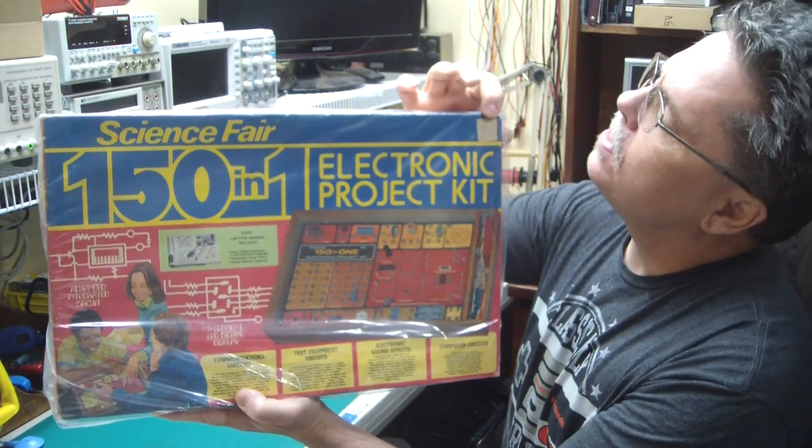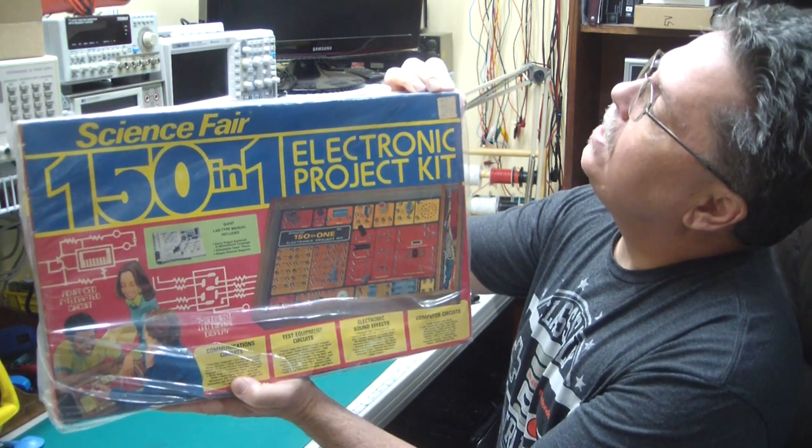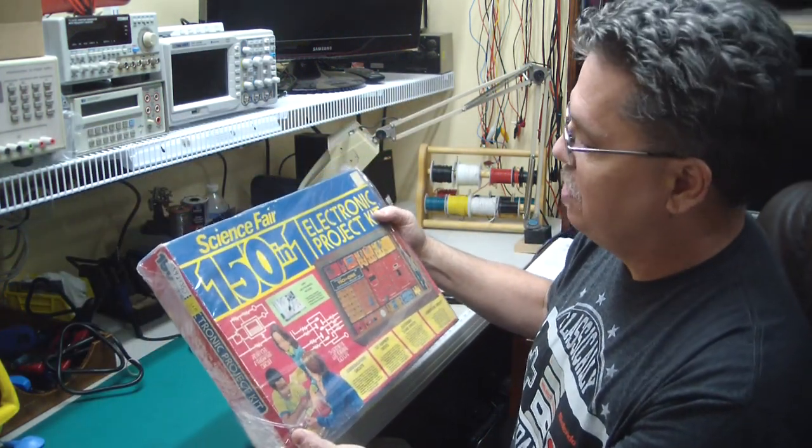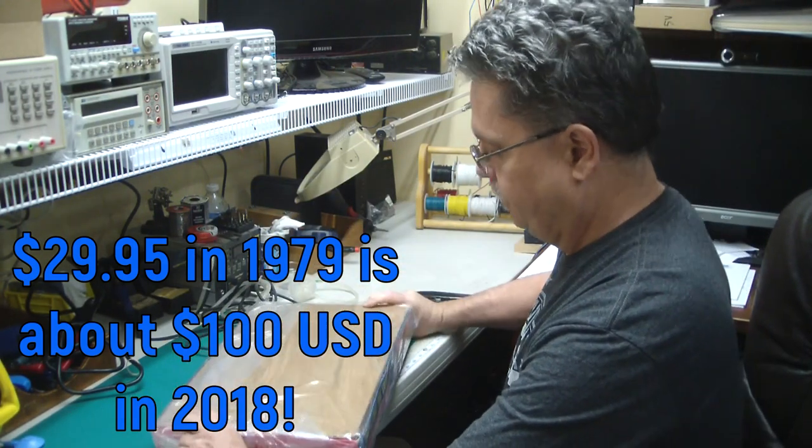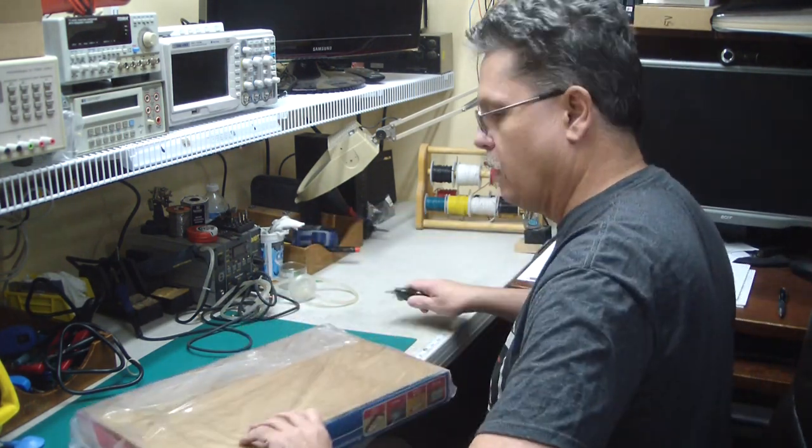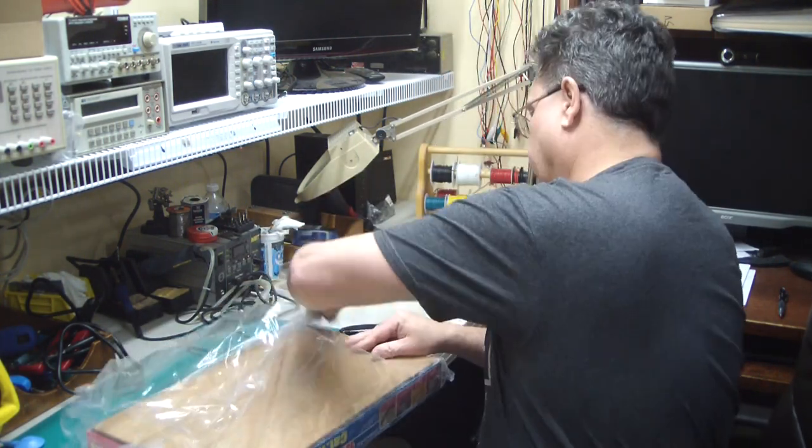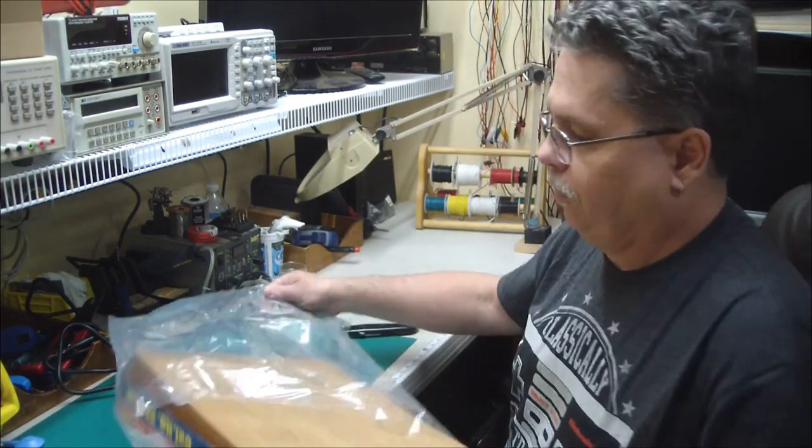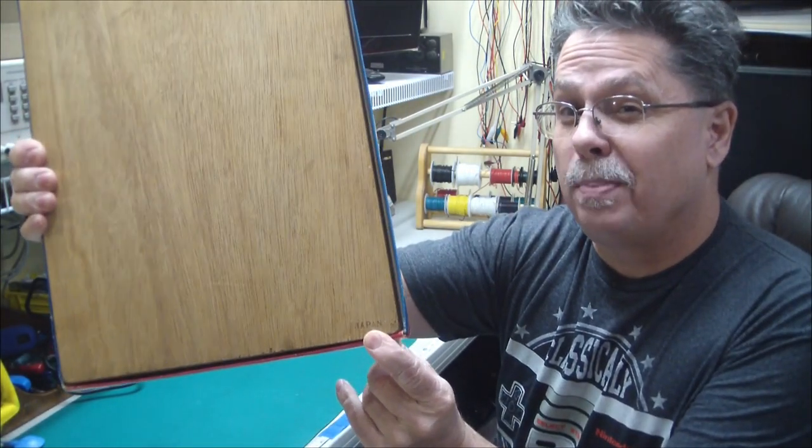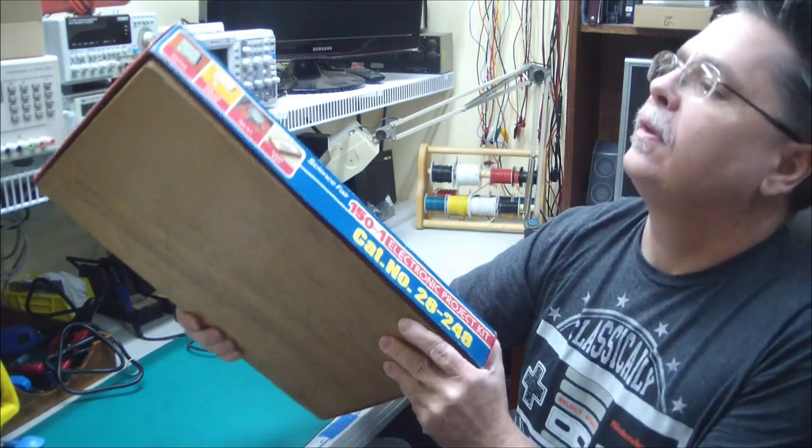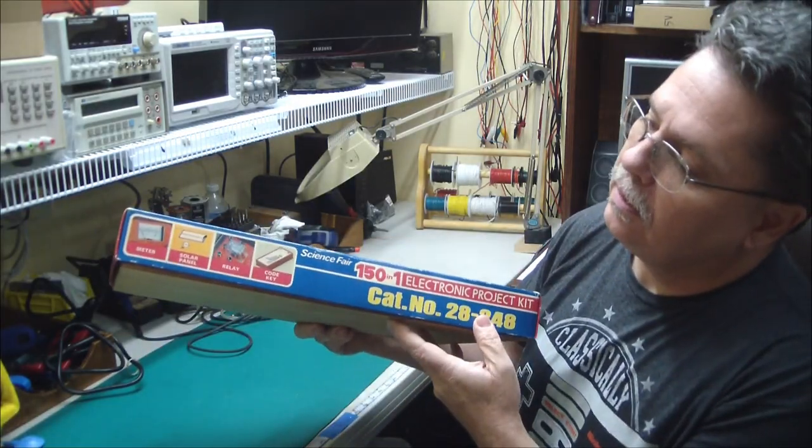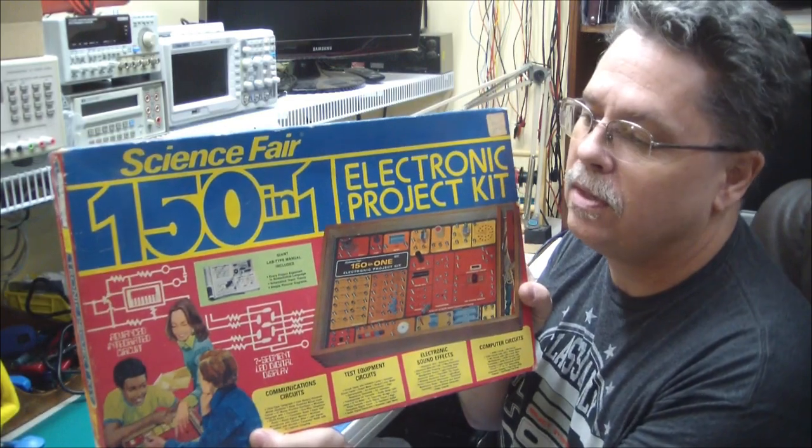It still has an original sticker on it here that says $29.95, which I guess was a pretty good amount of money in 1979. Right here on the bottom corner, it says Japan. All the best stuff is made in Japan. So, it's quite a colorful box all the way around.